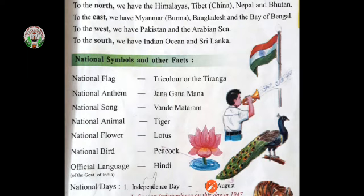As per Article 343 of the Constitution of India, India's official language shall be standard Hindi written in Devanagari script. These are the official languages of the Union of India at the central government level. However, each state is allowed to have its own official language based on its own linguistic demographics. There is a difference between a national language and an official language: while a national language has a patriotic and nationalistic identity, an official language is designated for communication at the official level.